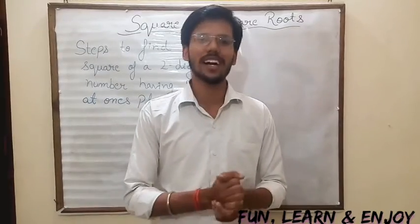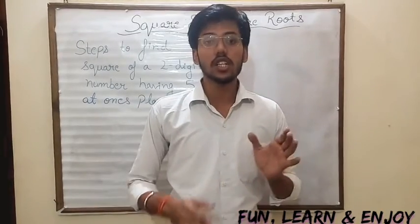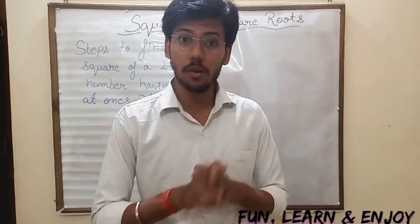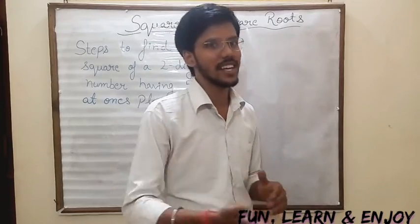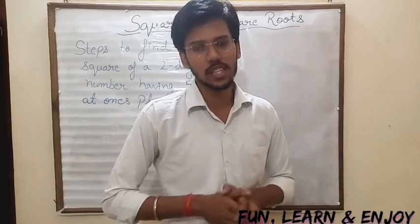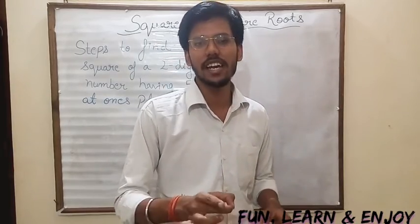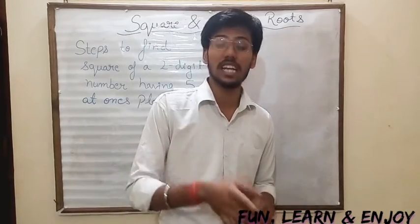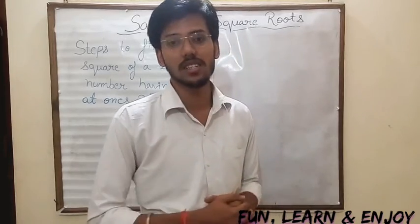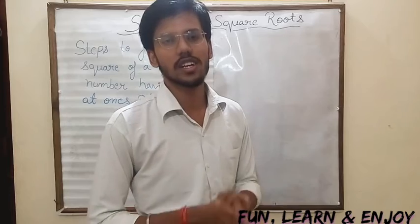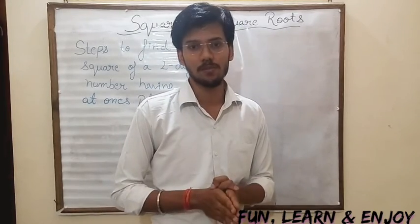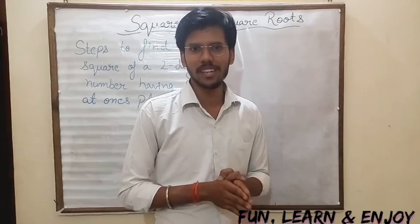Hello guys, welcome back. Today I am going to teach you a very interesting trick — an easy one to find the square of a two-digit number having 5 at the ones place. This trick has been derived from Vedic Math, which was introduced firstly in India. Shall we begin?